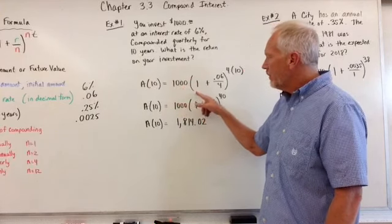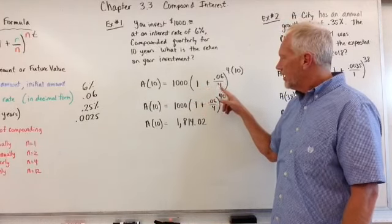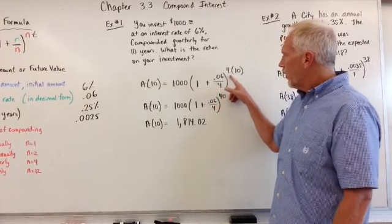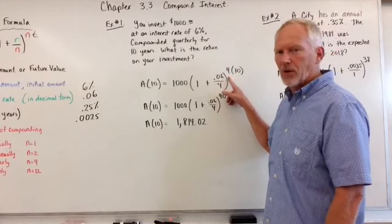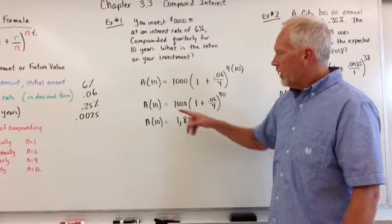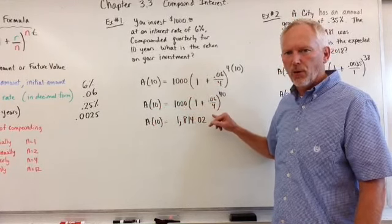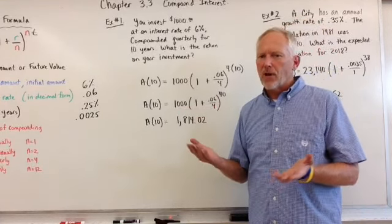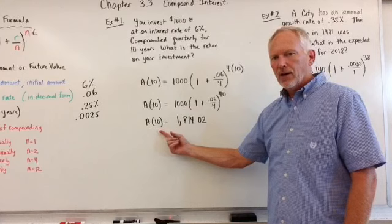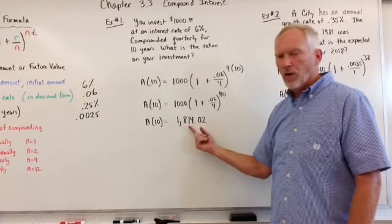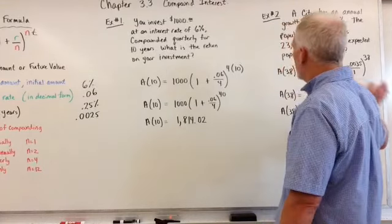So a of 10 because T is 10 is equal to a thousand, that's our principal amount, times one plus now one plus decimal form point zero six divided by four, that's our N value, raised to the N times T, which is the number of times the period for which it was compounded and the number of years. We continue on: a of 10 is equal to one thousand times one plus point zero six over four to the 40th power. At this point, there's not really much more arithmetic. You just plug it into your calculator. And what you should end up with is a of 10 or after 10 years at six percent, you should end up with one thousand eight hundred and fourteen dollars and point zero one eight. So I rounded up to two cents. So the next example.